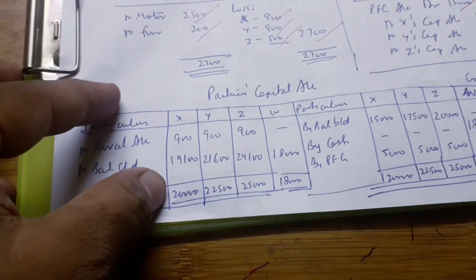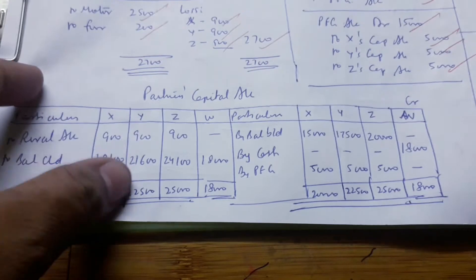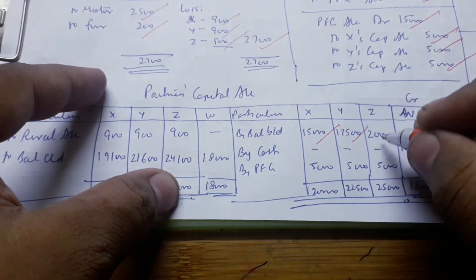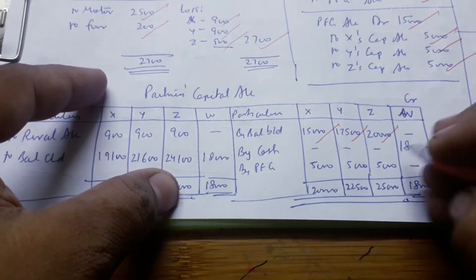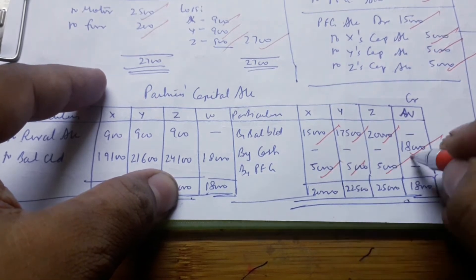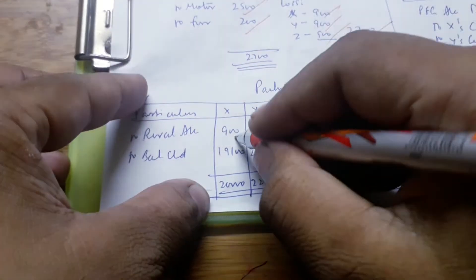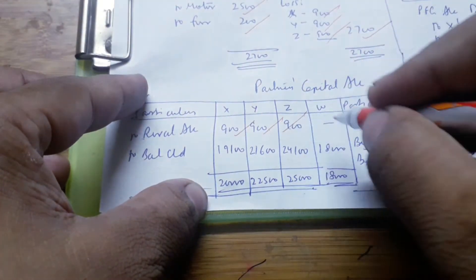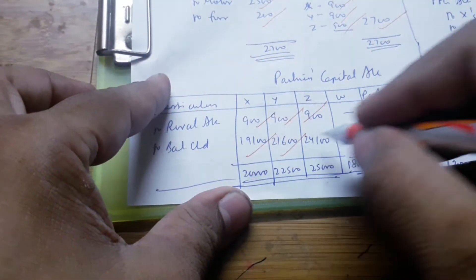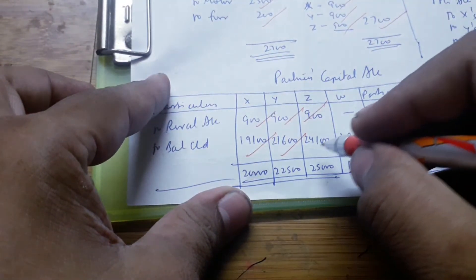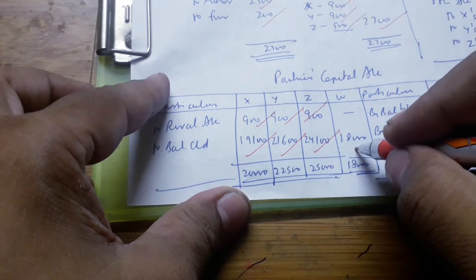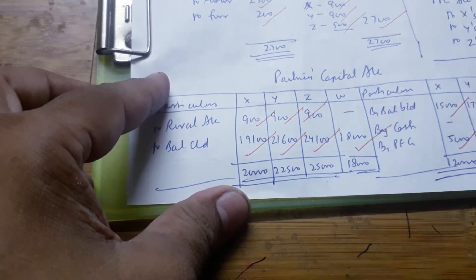Now see the capital account. In the capital account, there are balances of 15,000, 17,500, and 20,000. The new partner gave 18,000. After the premium part and revaluation, the closing balances are: X is 90,000, Y is 26,000, Z is 24,000, and W is 18,000.